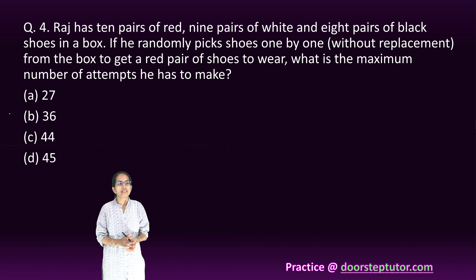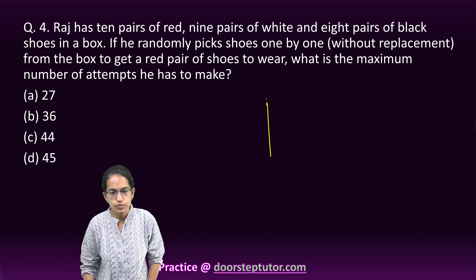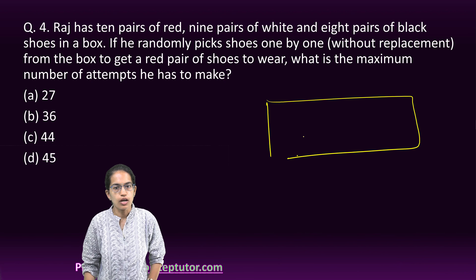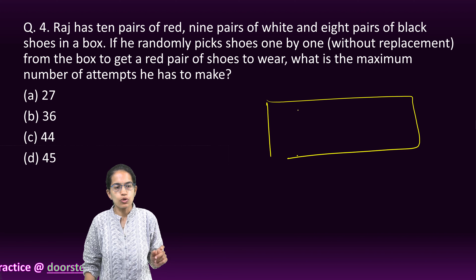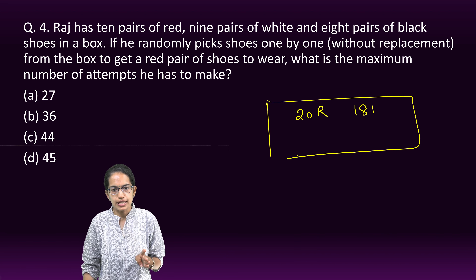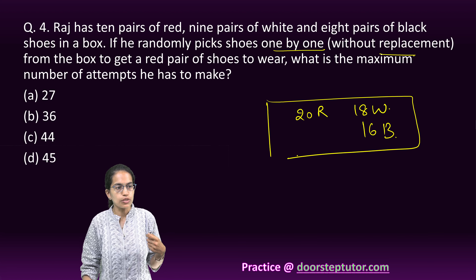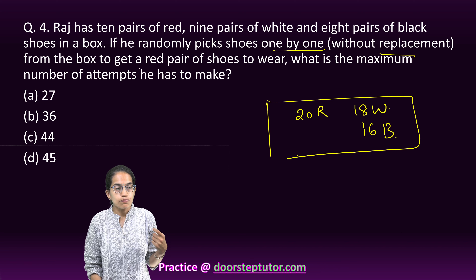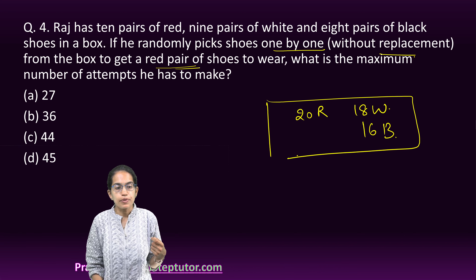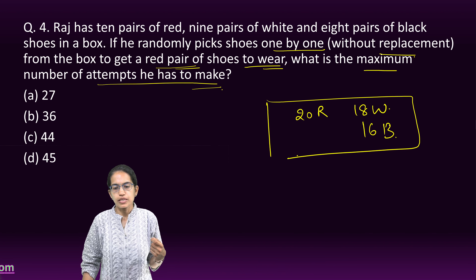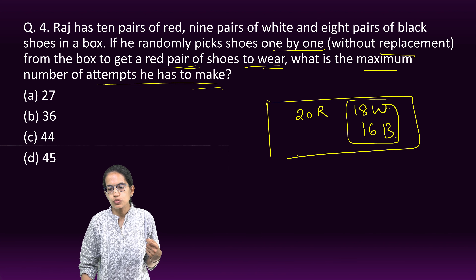The next question: Raj has 10 pairs of red socks. So this is pairs of shoes. 10 pairs of shoes means 20 red shoes, 9 pairs of white means 18 white shoes, and 8 pairs of black means 16 black shoes. He randomly picks shoes one by one without replacement from the box to get a red pair of shoes to wear. What is the maximum number of attempts he has to make?